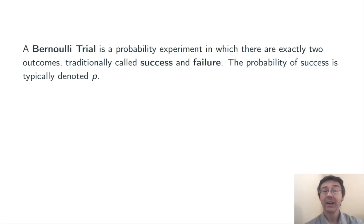A Bernoulli trial is a very simple sort of probability experiment in which you have exactly two outcomes, traditionally called success and failure. Now a probability experiment like this is going to be completely defined by the probability of getting a success. We'll denote that with a lowercase p.